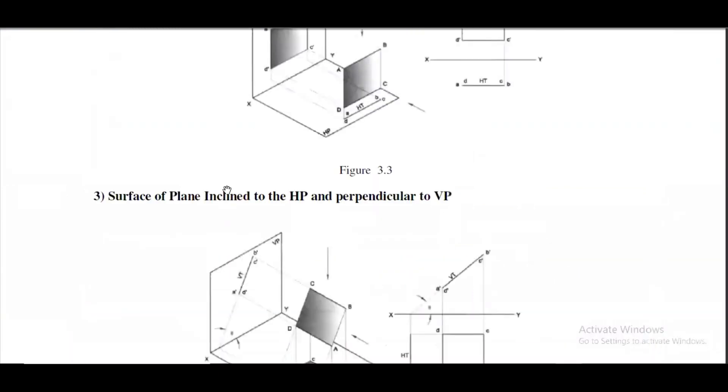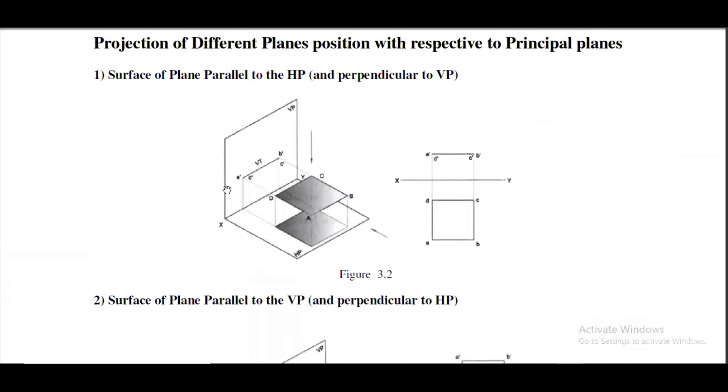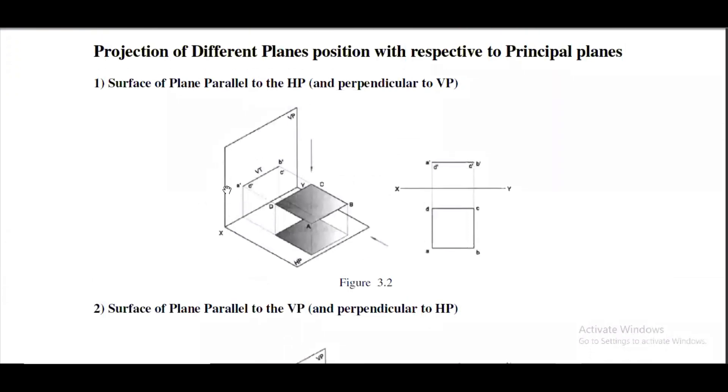First of all we will see the first one: surface of the plane parallel to HP and perpendicular to VP. In the figure we can see, remember one thing in the planes. In the following plane, A B C D, the sides AB, BC, CD, DA are called sides, and the complete figure ABCD is called the surface.